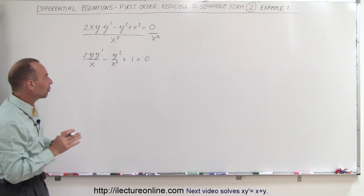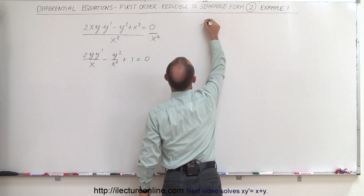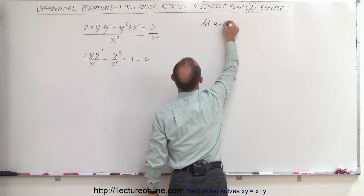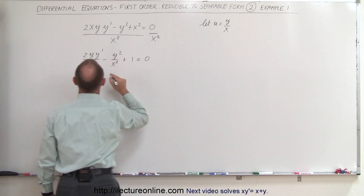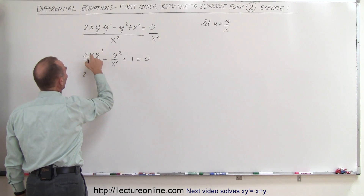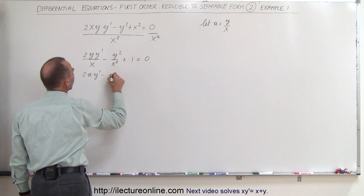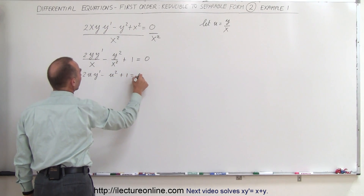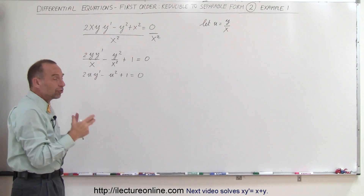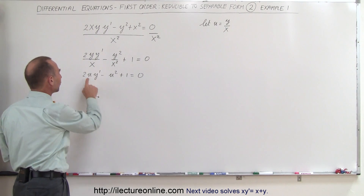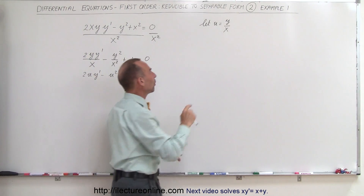Now we have a situation where we have some function of y over x, so now we can say let u equal y over x. When we substitute that in, we get 2 times u·y' minus u squared plus 1 equals 0. Now we have an equation that seems easier to separate, however we still have a u variable and a y prime, so we have to make that conversion as well.